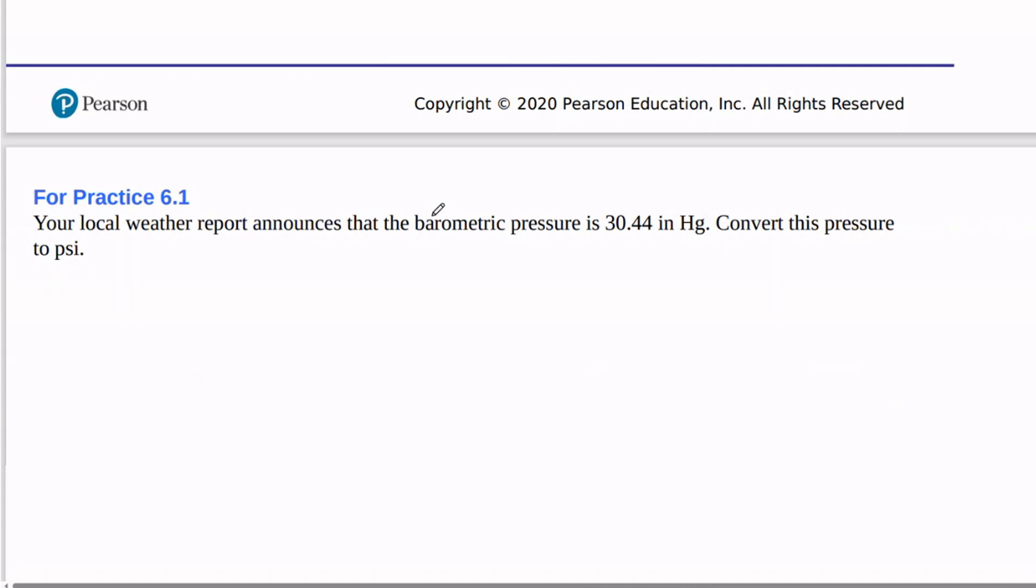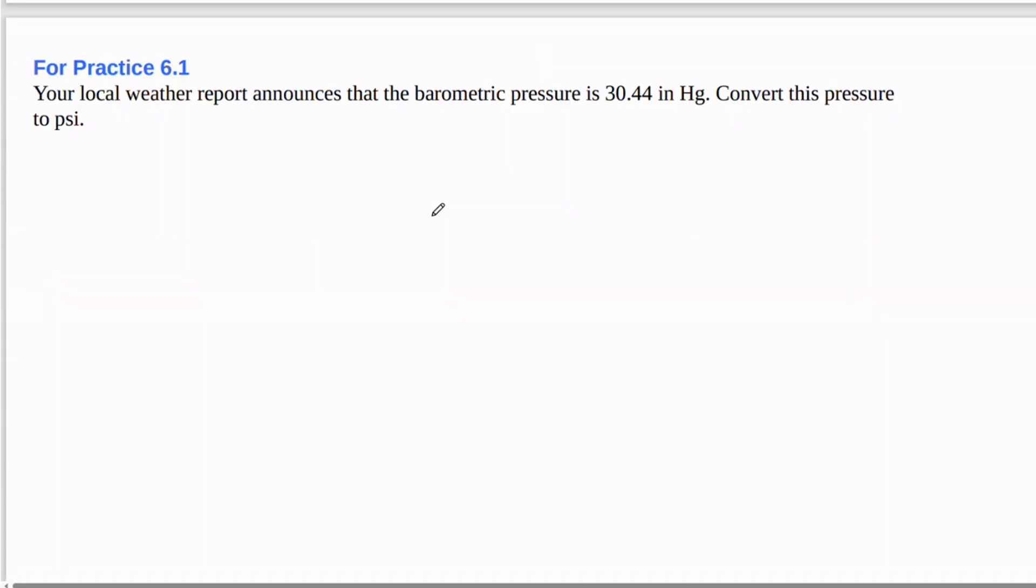So now we'll work the four practice problem. Your local weather report announces that the barometric pressure is 30.44 inches of mercury. We need to convert this pressure to PSI. So we need to convert inches of mercury to PSI.